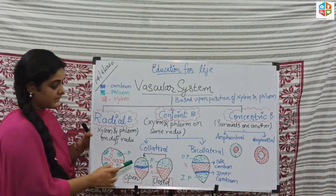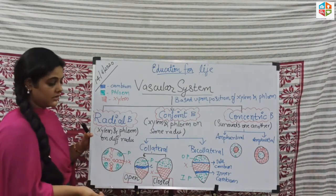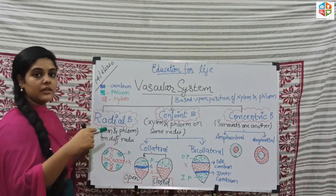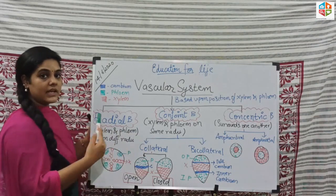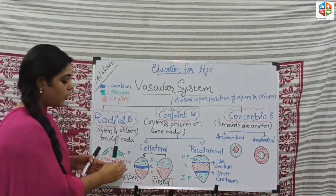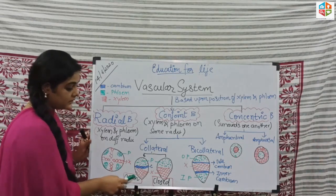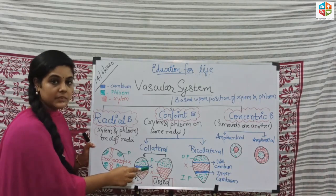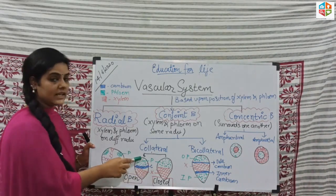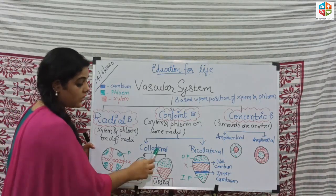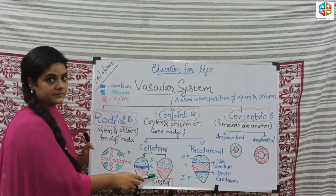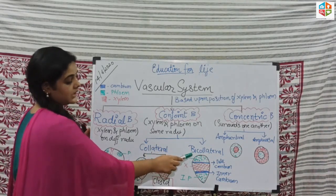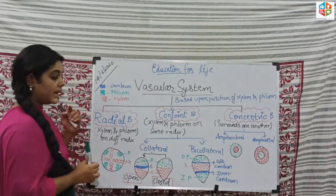The second type is conjoint bundles, where xylem and phloem are on the same radius. Conjoint bundles are of two kinds: collateral and bicollateral. In collateral bundles, xylem is on the inner or center side and phloem is on the outside or periphery. Collateral bundles are further classified as open — where cambium is present, seen in dicot stems — and closed — where cambium is absent, seen in monocots.